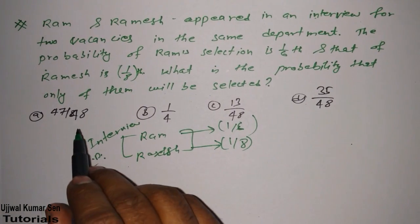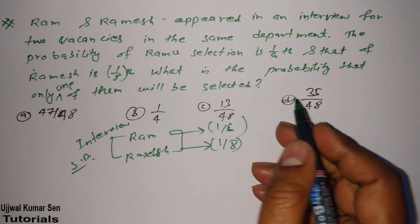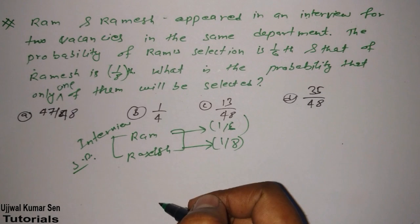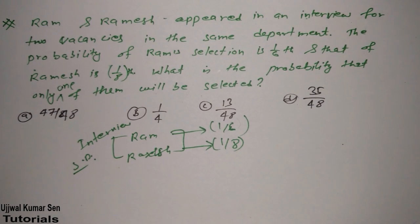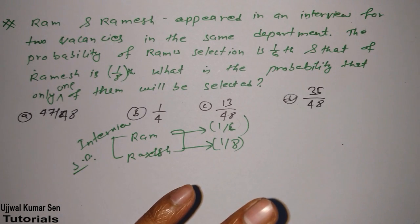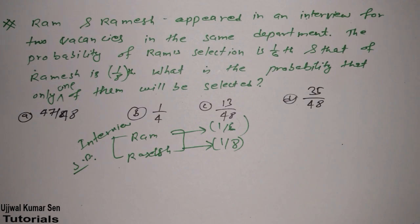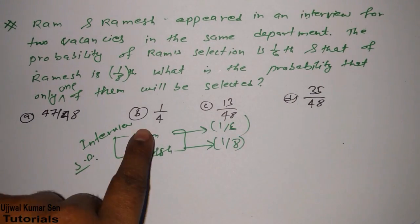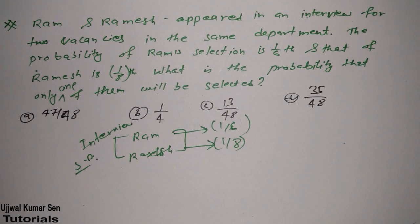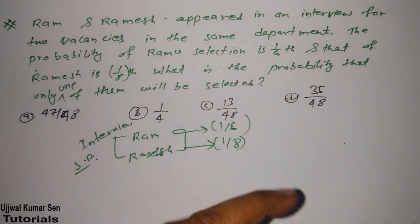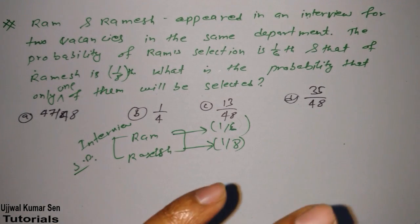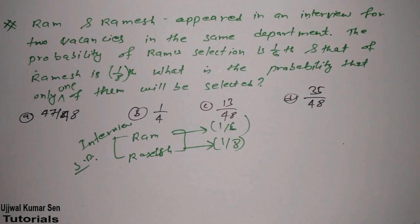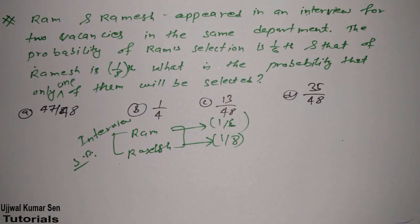The probability of Ram selection is one by six and that of Ramesh is one by eight. What is the probability that only one of them will be selected? Either Ram or Ramesh. Now let me share with you one of the simple tips here. One by six means fraction. One by eight means very fraction. Now see this, can this be possible answer? No. This one, this one is also not possible. This one or this one may be possible. So if you wanted to eliminate things, then you can eliminate options from all four options. But I'm going to share with you how to solve the problem. Because that is my main motto here. That's the shortcut I have shared with you. I hope you got it.